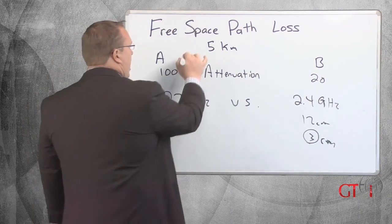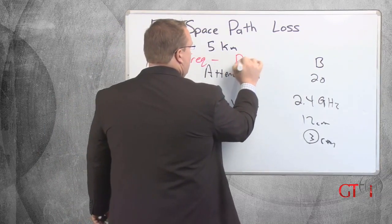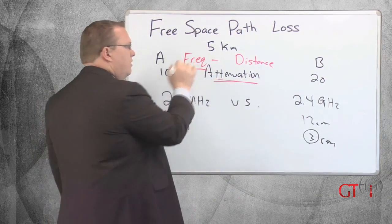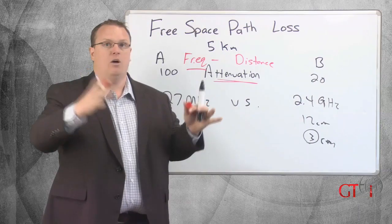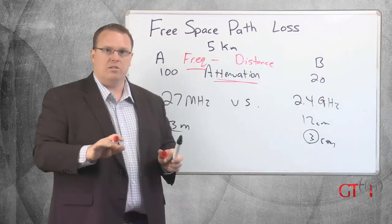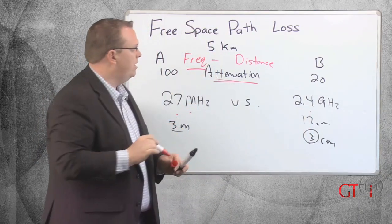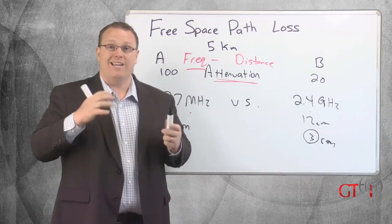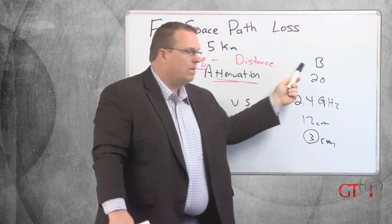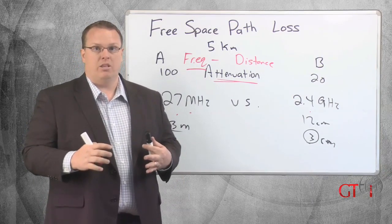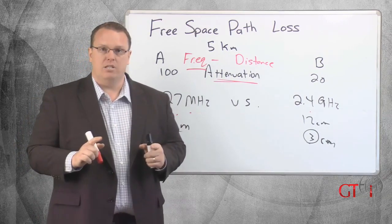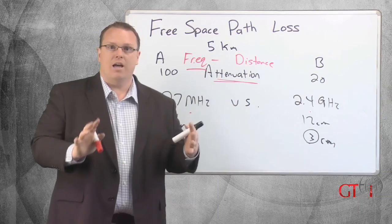When you do an FSPL calculation, it asks for the frequency and the distance. Attenuation alone has nothing to do with frequency — it's just the inverse square law, where we lose 6 decibels every time we double the distance. But because of antenna aperture, frequency is an important factor. In real life, if I'm doing a wireless link between point A and point B, the inverse square law alone won't give me the full loss — I need the frequency component to account for antenna size.